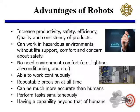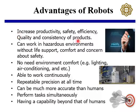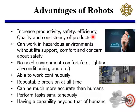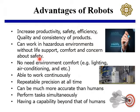Let us start with the advantages of robots. There are various advantages of robotic systems to be integrated in industry. For example, it will increase productivity, safe operation, efficiency, quality and consistency of products. Robots can work in hazardous environments without any extra support — for example, life support, comfort or concern about extra safety — which is not possible for human operators.